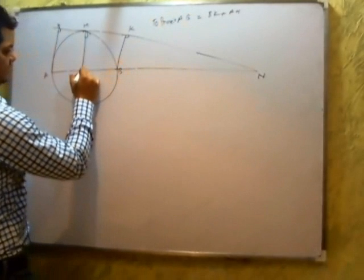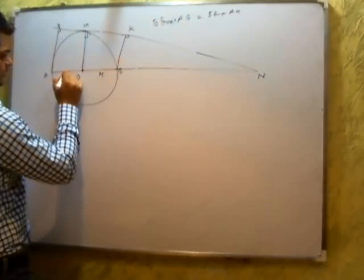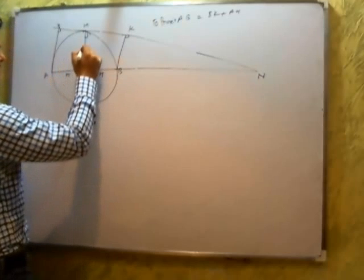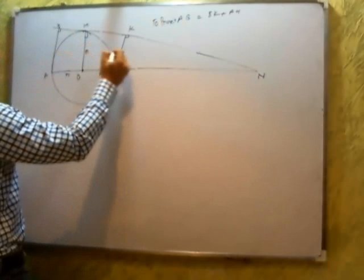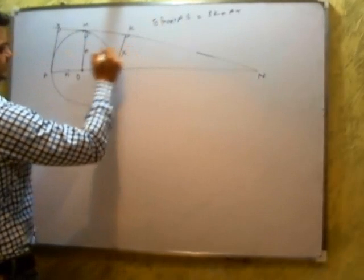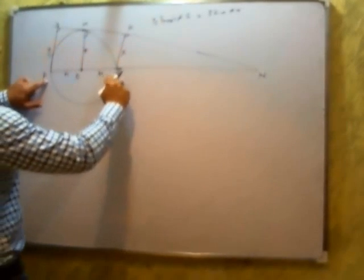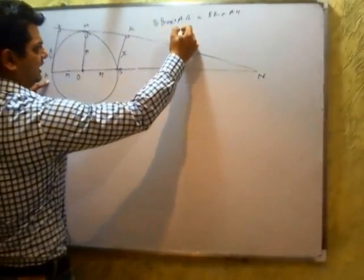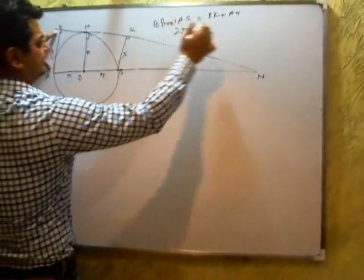For easiness, if this is R, this is R, and this is R — and let it be X and let it be Y — we need to prove AB, which is 2R, equals X plus Y.